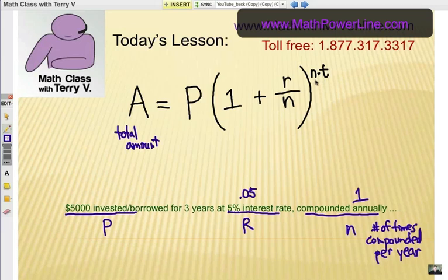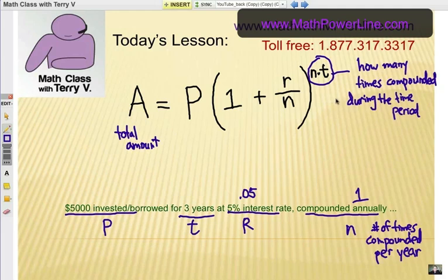Now this N times T, again N is the number of times compounded per year and T is the time period in years. Always in years. Now I want to talk about this exponent right here. Here's a shortcut. Instead of figuring out the N and the T and multiplying it, what it really means is how many times compounded during the time period. Look at our example here. We have our money invested for three years and it's compounded once every year. So this exponent here, this N times T part, just think of it as how many times is it compounded in three years, once a year? Well, obviously that will be three. That's kind of a shortcut.